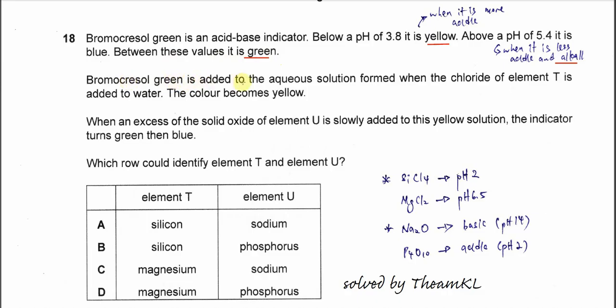Bromocresol green is added to the solution formed when the chloride of element T is added to water. The color becomes yellow, so this is a very important hint. Color becomes yellow means it's more acidic, so when element T is added to the water it will lower the pH of the solution, and we must refer to the elements T that are given.